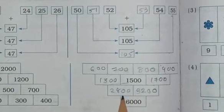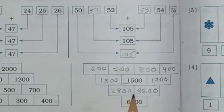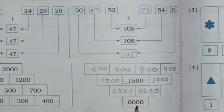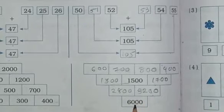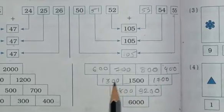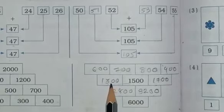After 2800 plus 3200 is equal to 6000. ये पेटर्न भी हमारी complete हुई.